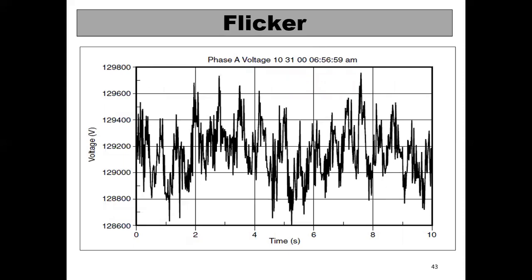This graph shows voltage flicker — the voltage continuously changing in the upper or lower direction. The voltage level suddenly increases, then decreases, increases, decreases. Flicker can occur in only the positive side or only the negative side. For one complete cycle, in the positive half cycle the voltage continuously varies. This is called flicker.